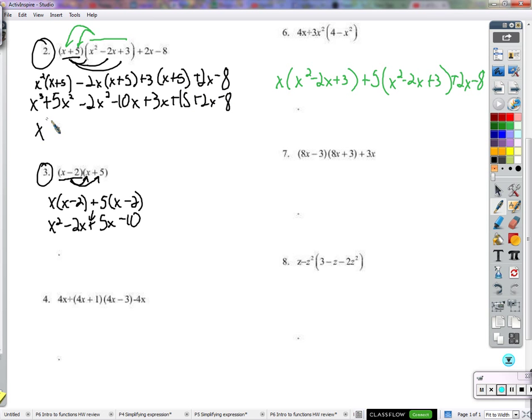Now, we have x to the 3rd. 5x squared minus 2x squared, and there's no other x squareds around, so we have plus 3x squared. Negative 10x plus 3x plus 2x. So, that's negative 10x plus 5x. So, I have negative 5x plus 15 minus 8. That's plus 7.